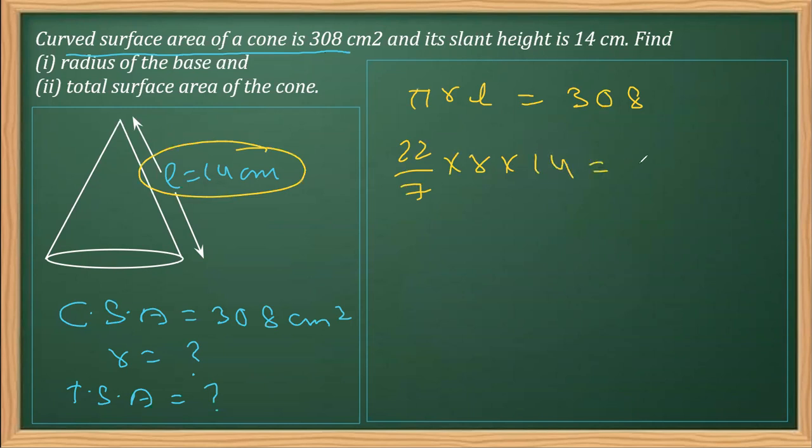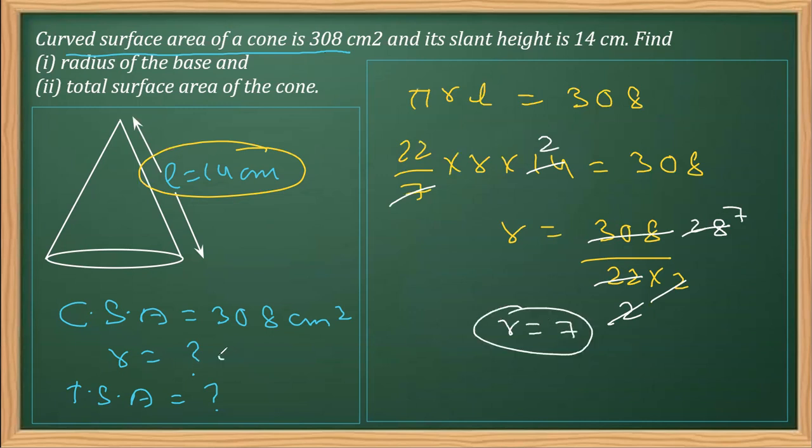So (22/7) × R × 14 = 308. We can reduce this: 7 cancels with 7, and 14 becomes 2, giving us (22 × 2 × R) = 308. This simplifies to 11R = 308 after dividing by 2. Dividing 308 by 11, we get R = 7 cm.